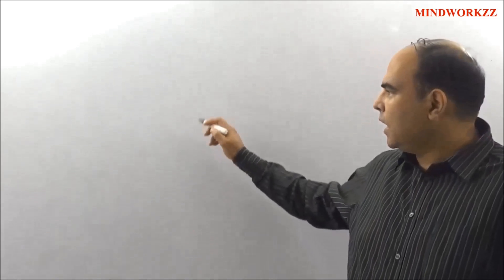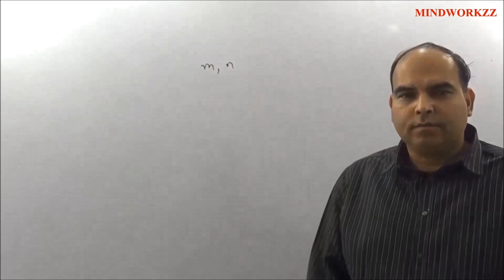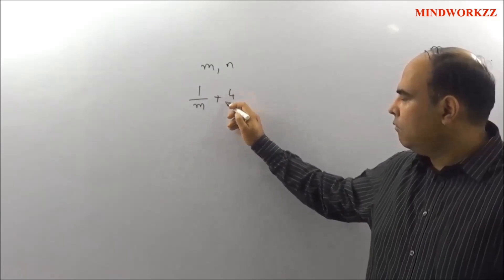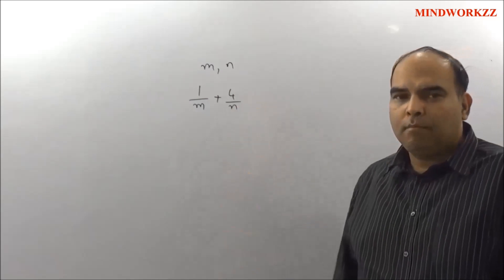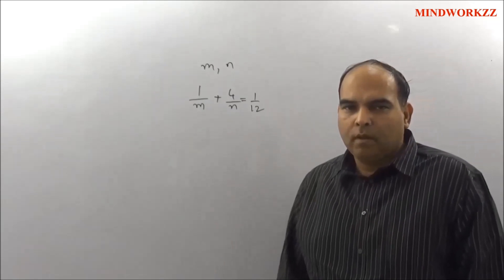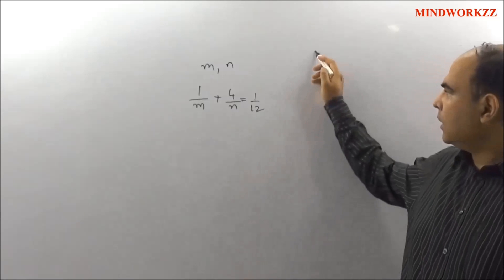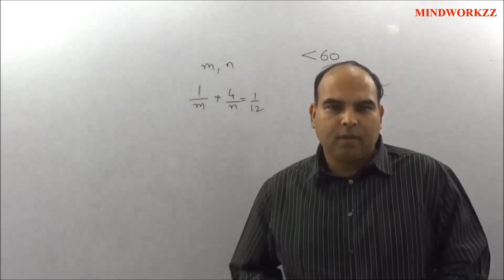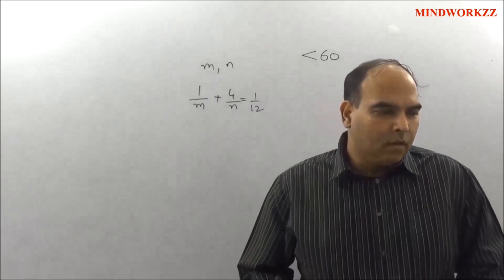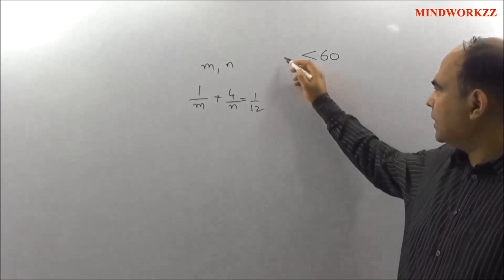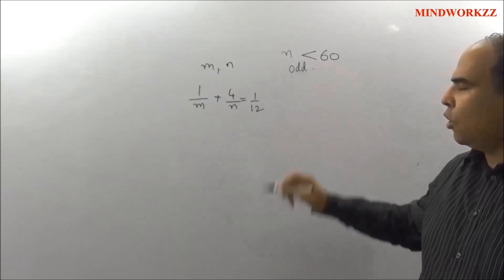Now let's take a look at this question. The question says that m and n are positive integers that satisfy the equation 1/m + 4/n = 1/12, and the other constraint given is that the value of n is less than 60. So when you look at this question, n is less than 60 and also n is odd.